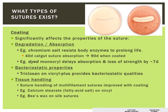The coating can significantly affect the properties of a suture. For example, it can delay its degradation, as in chromium salt or dyes, which can double a suture's longevity. Coatings can also be bacteriostatic and prevent bacterial growth, as in VicroPlus that contains triclosan coating. Finally, it can help with tissue handling, where certain coatings allow for smooth, reduced friction, like calcium stearate on Vicryl or wax on silk sutures.